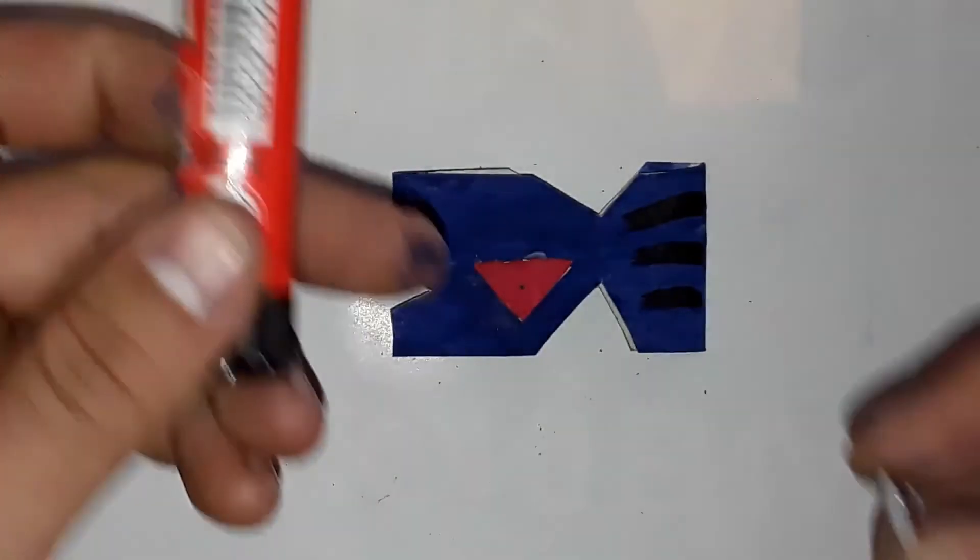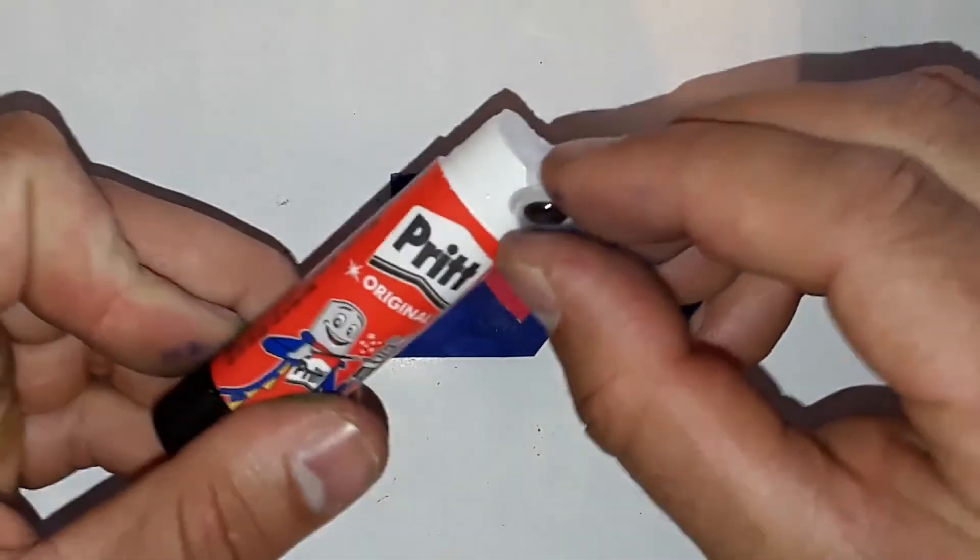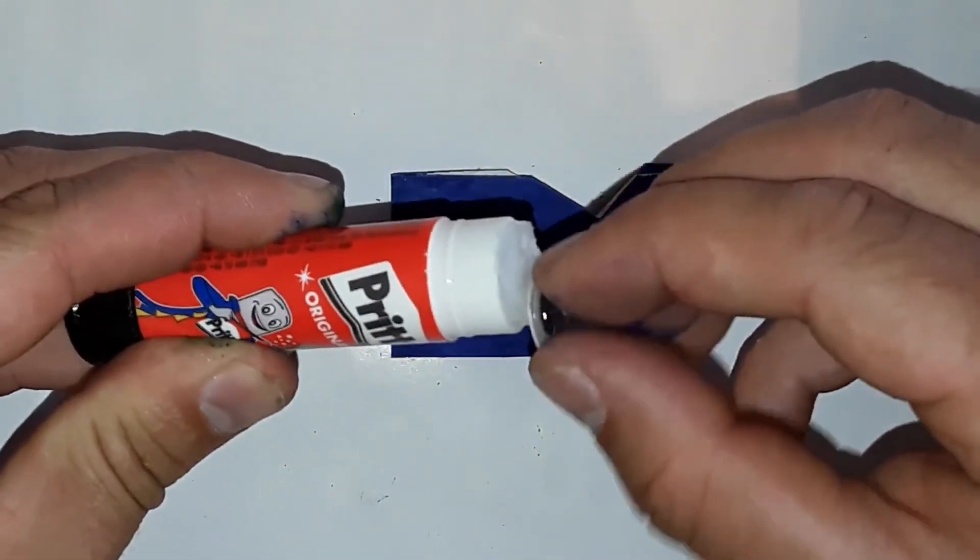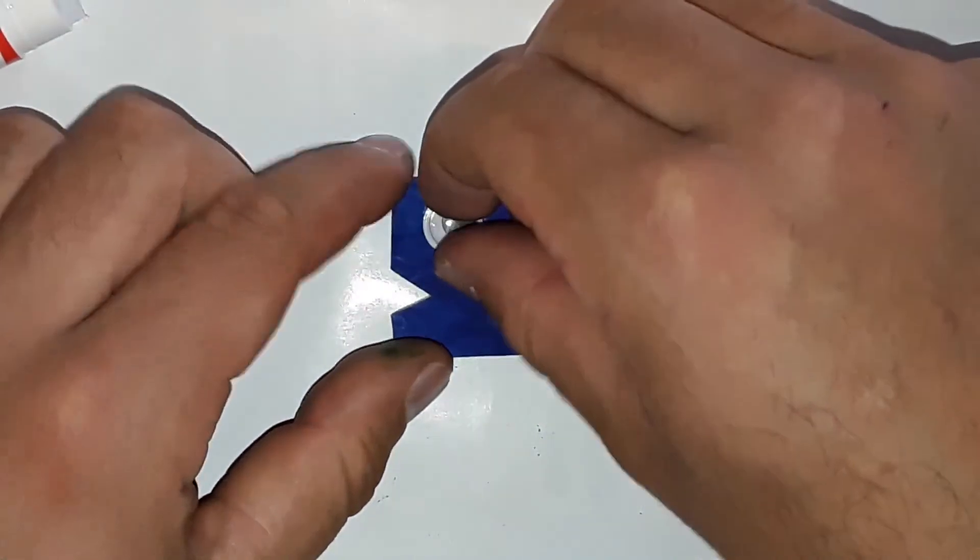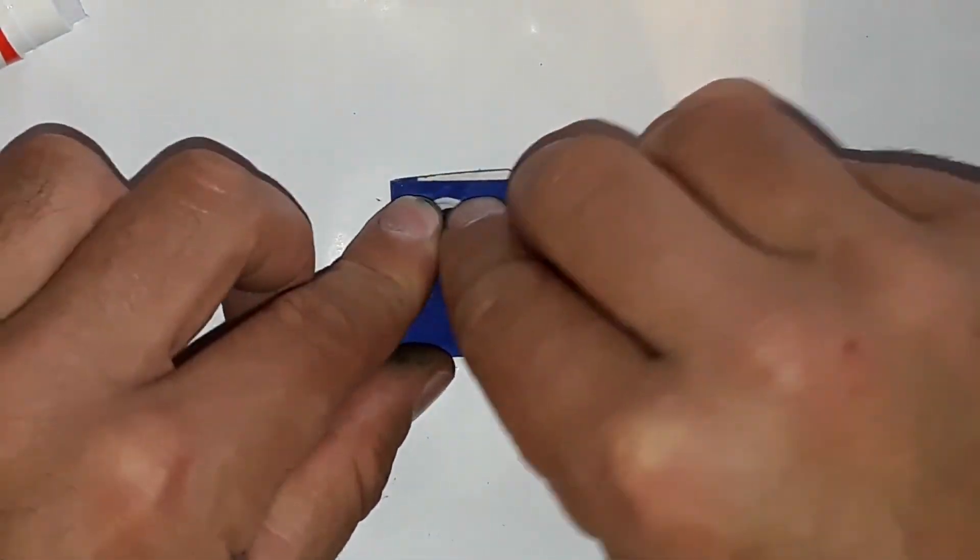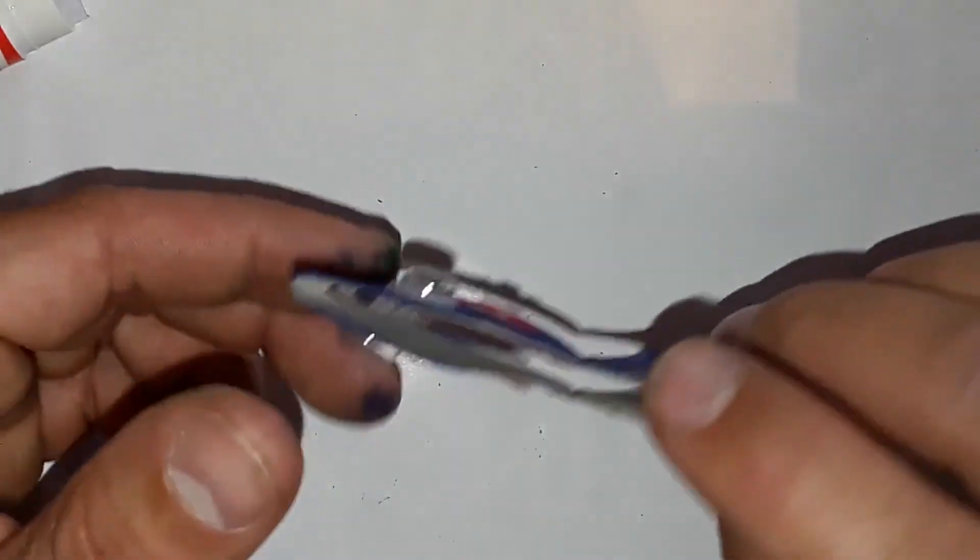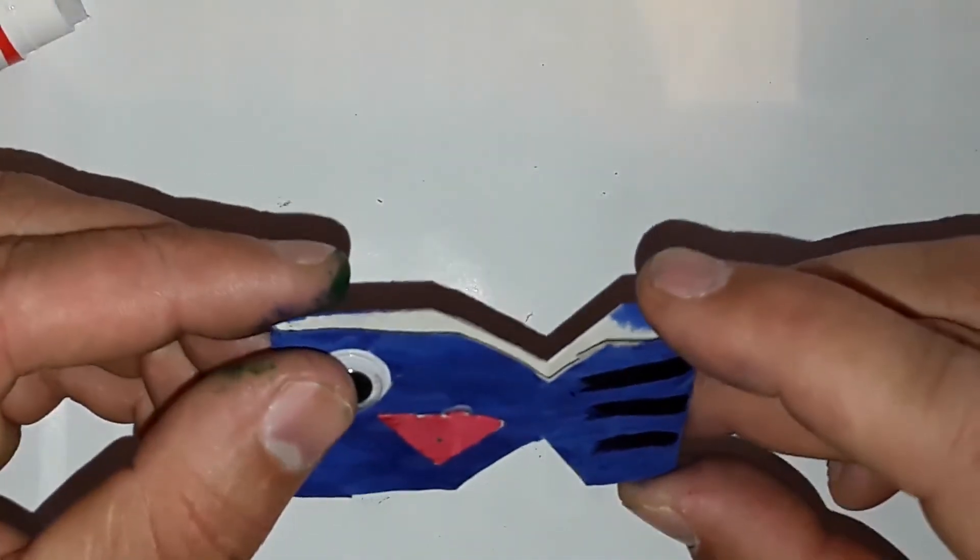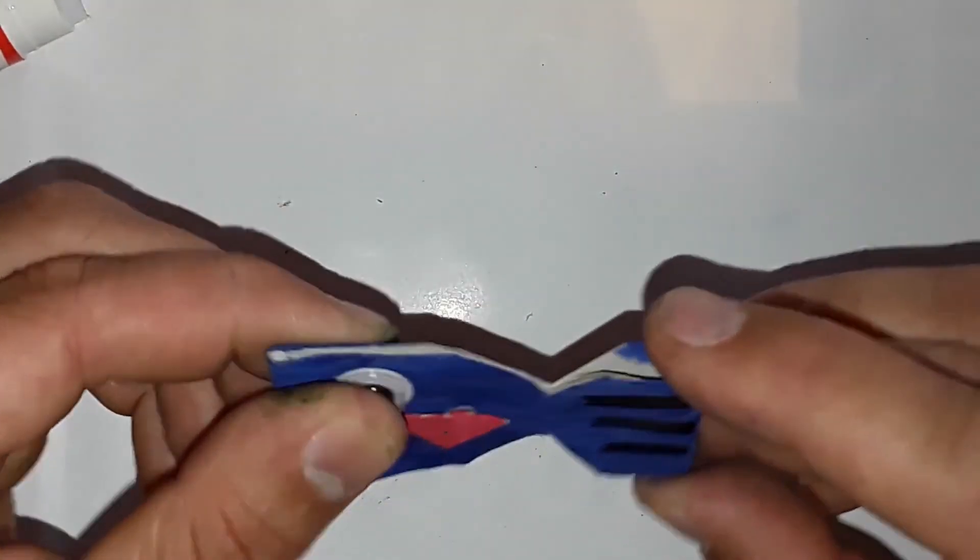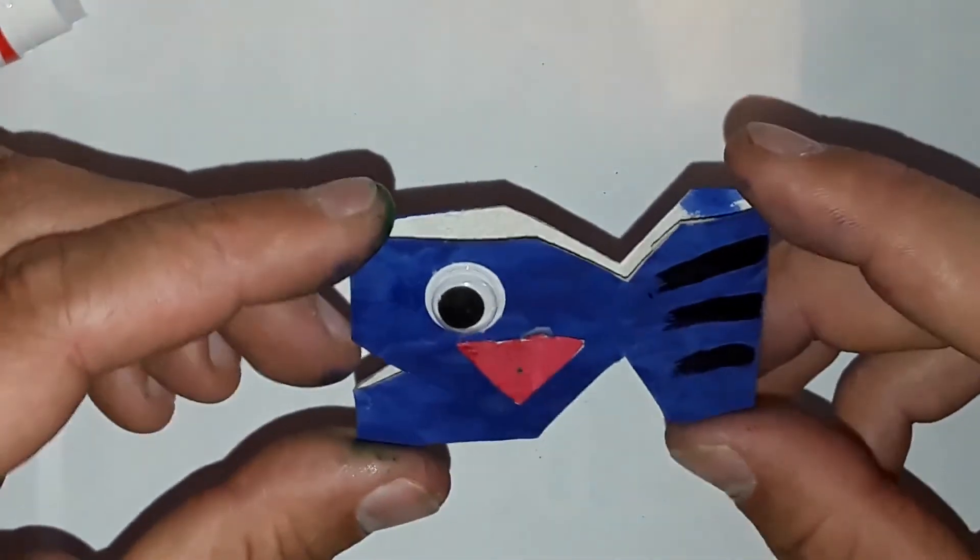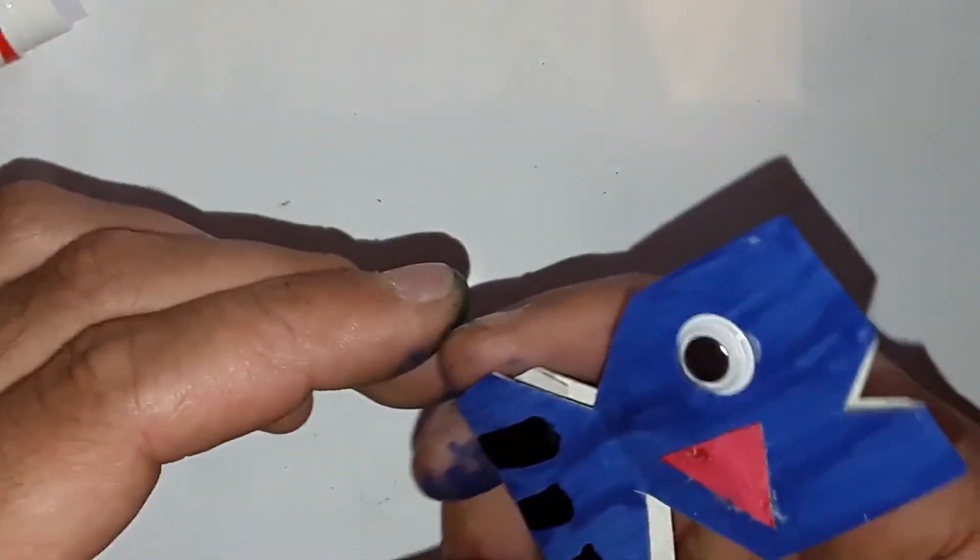Apply a little glue again and stick the eye on. When you look at it from above, you can also see where the eye needs to go approximately. And your fish is already finished.